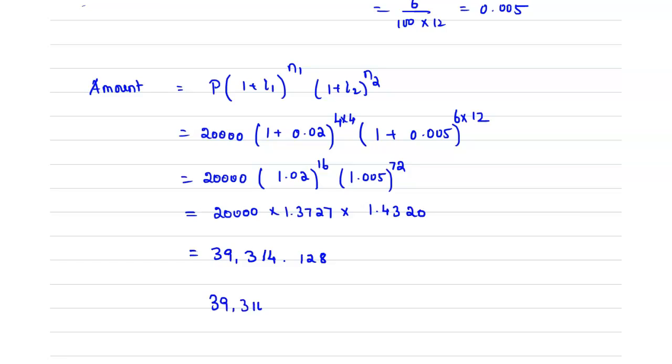After multiplying this we will get which is 39,314.128. So approximately 39,314 rupees 13 paisa.